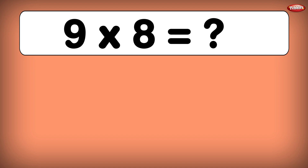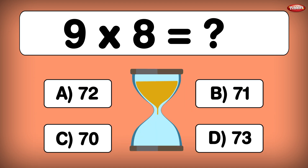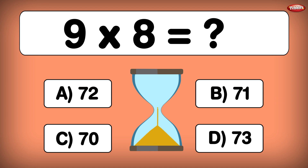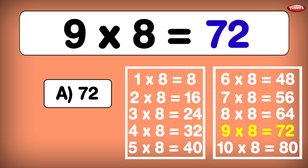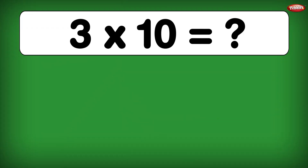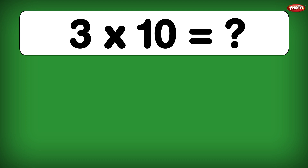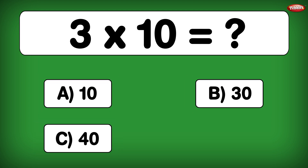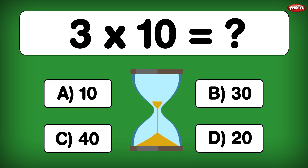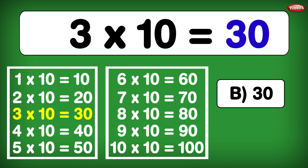9 times 8 is equal to... 9 times 8 is 72. 3 times 10 is equal to... 3 times 10 is 30.